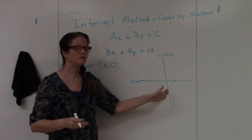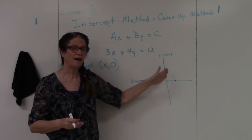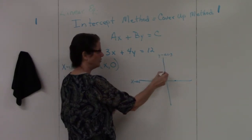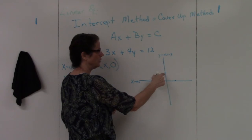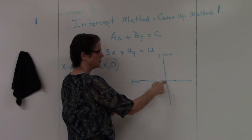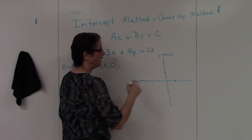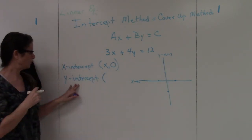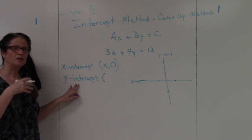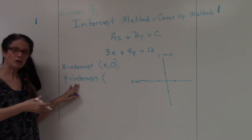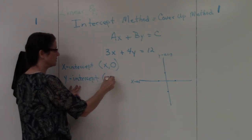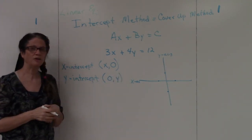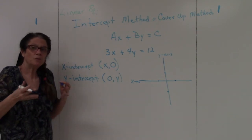With a y-intercept, we need the point where the line crosses the y-axis. Just like the other one, if I put a point here my x value is zero. So with the y-intercept, the address of the point is going to be zero, comma whatever your y value is.